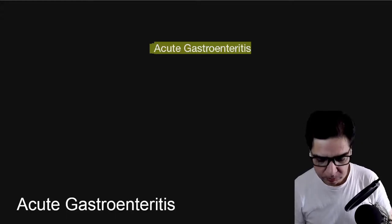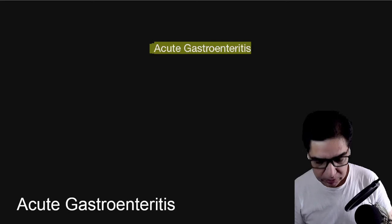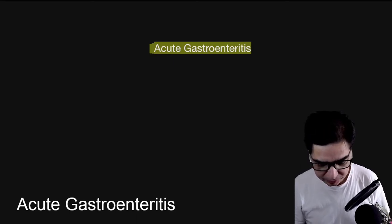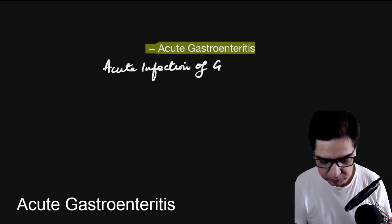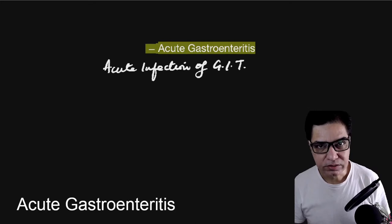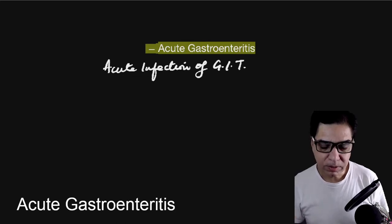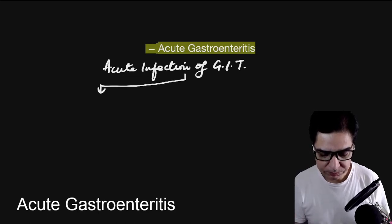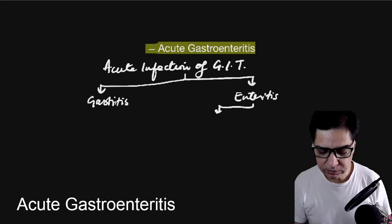Today we are going to talk about acute gastroenteritis, which means acute infection and inflammation of the gastrointestinal tract. Looking at the word 'gastroenteritis,' there is the gastric part and the enteral part. Infection in the stomach is called gastritis, and infection in the intestines is called enteritis. The enteral part can involve the small intestines or the large intestines.